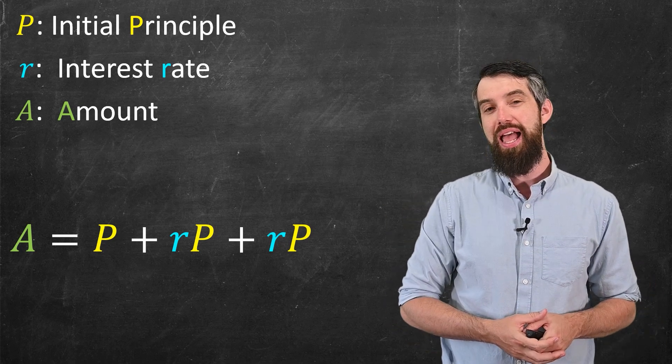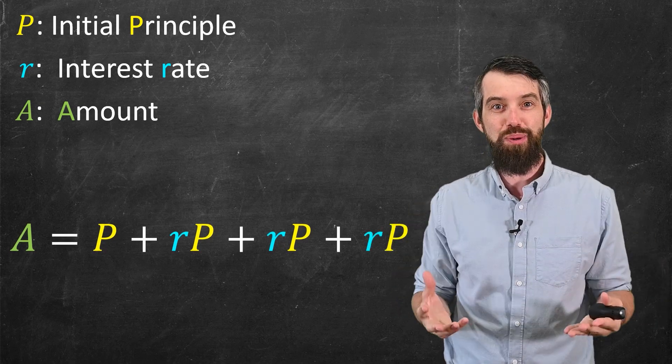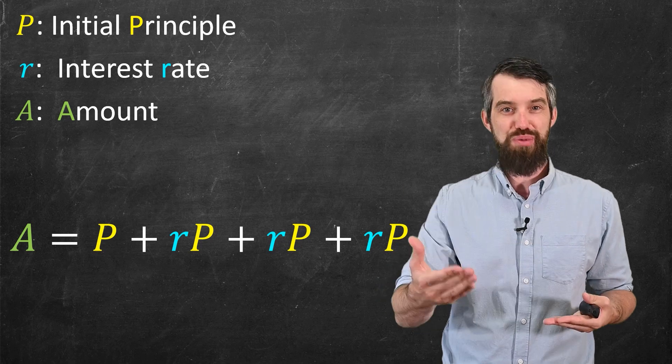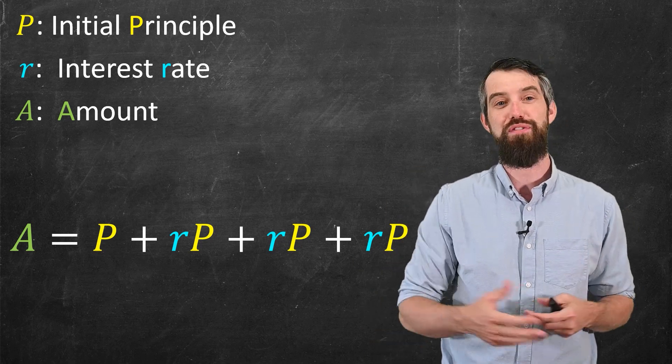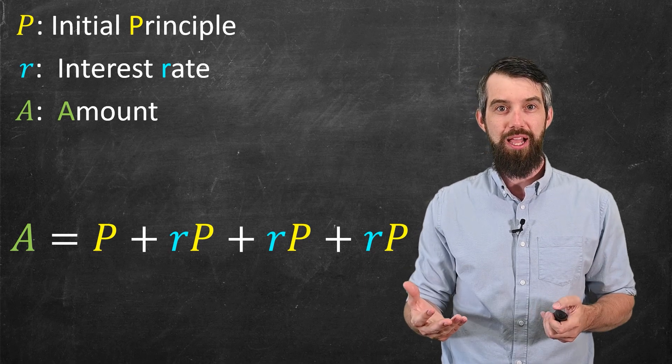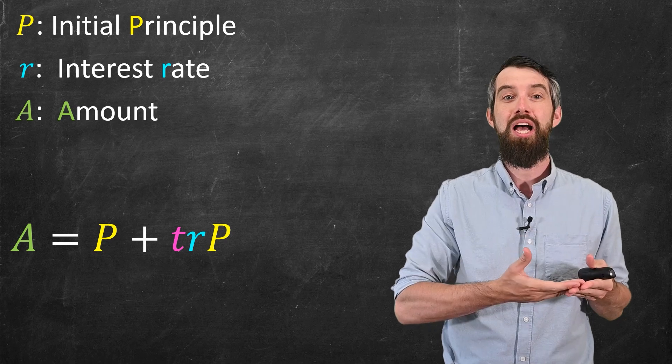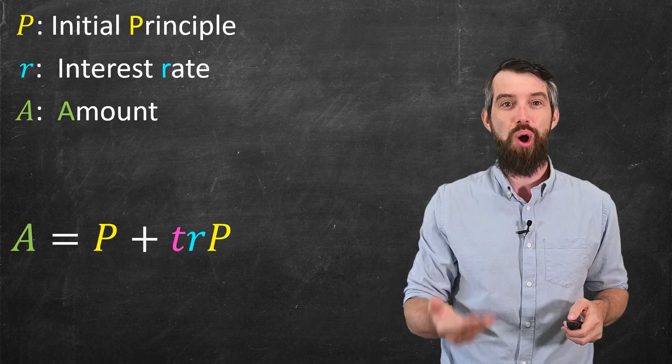And so I get P plus rP plus rP. If I loan it out for three periods, I'd have another rP. And in general, I can keep on doing this. And the magic of simple interest here is that every time you go forward another period into the future, you just have the same interest payment, rP over and over again. And that lets us simplify our formula. Our formula can just be P plus t times rP,